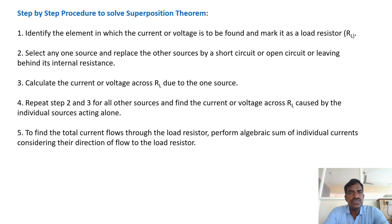Coming to the step-by-step procedure to solve Superposition Theorem. First step: identify the element in which the current or voltage is to be found and mark it as load resistor RL. Second step: select any one source and replace the other sources by short circuit or open circuit, leaving behind its internal resistance. Third step: calculate the current or voltage across RL due to that one source. Repeat second and third steps for all sources.